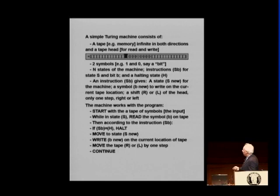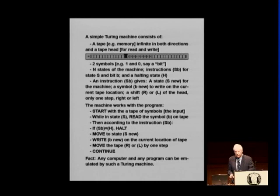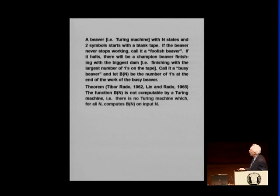And then you have a shift, right or left, only one step. So you move either here or there. And then you have a program. The computer program will be, you start with a table symbol like that. When you are in state S, read the symbol. Then, according to an instruction, if it tells you to stop, you stop. And otherwise, you move, change the state to the new state. You write the new bit on the same location. And then you move the tape one step, to right or left. Then continue. So any computer and any program can be emulated by such a machine. Of course, it may take, it's not a practical thing to do, but for theoretical analysis, it is.